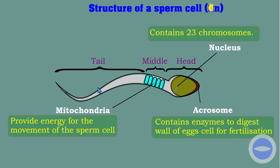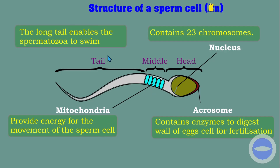The energy needed for sperm movement is produced inside the mitochondria via respiration. The long tail enables the spermatozoa to swim and move forward. These are the functions we must be able to answer in an examination — if you write the functions like this, you will get all the marks. This is all for spermatogenesis.